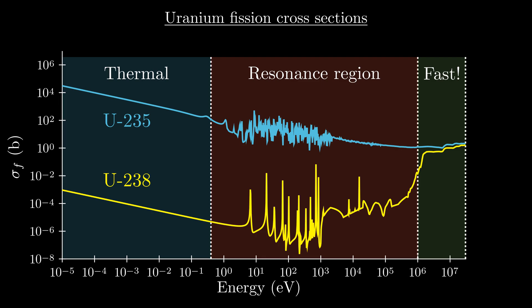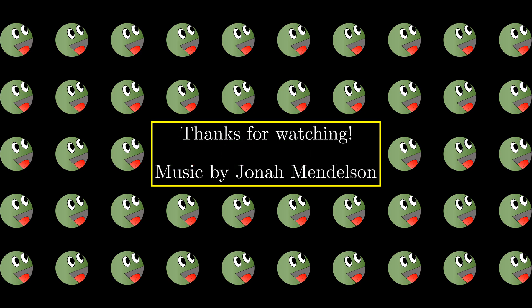Depending on the energy of neutrons in a reactor, fission and capture and absorption cross-sections can vary significantly, and this leads to some pretty profound differences in how reactors behave. Thanks for watching! Now that we understand cross-sections, we're finally ready to start introducing reactor theory in the next video. Hope to see you there!